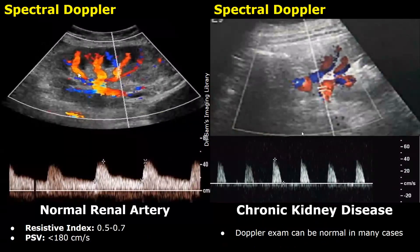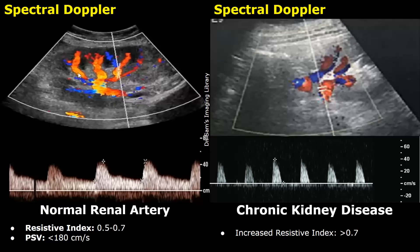The Doppler exam of the renal artery and its branches can be normal in many cases of chronic kidney disease, but in some cases you may find an increased resistive index — it could be 0.9 or 0.85. The normal resistive index of the renal artery is usually between 0.5 and 0.7, and the peak systolic velocity is usually less than 180 centimeters per second. In chronic kidney disease, the resistive index can be elevated.